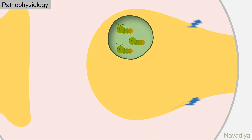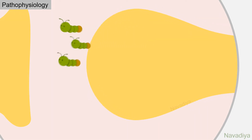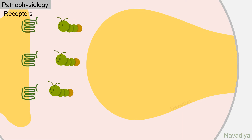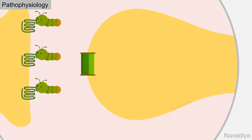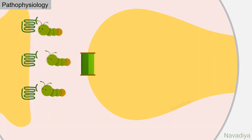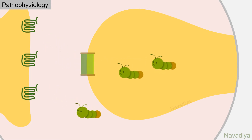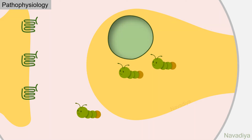Then when an impulse comes, they are released into the synaptic cleft. Post-synaptic neurons have dopamine receptors where dopamine binds, and thus we get dopamine activity in the basal ganglia. From the cleft, most of the dopamine is taken back into the presynaptic neuron, and most of that dopamine is again transported into the secretory vesicle for reuse.